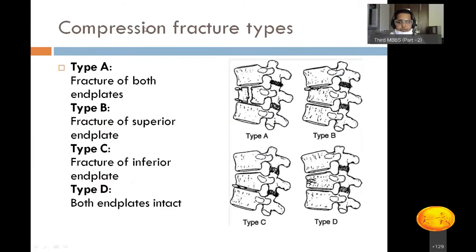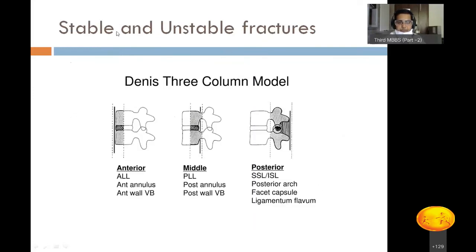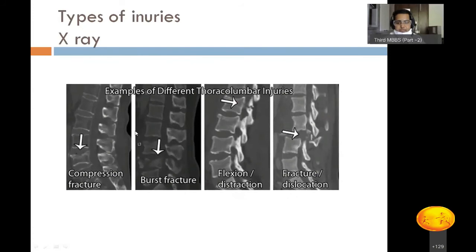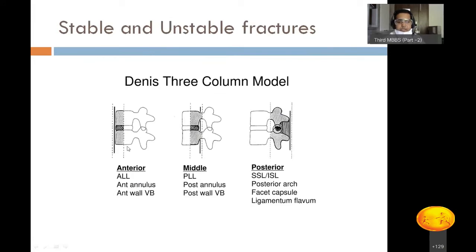Compression fractures are further subclassified: Type A — fractures of both end plates; Type B — fracture of the superior end plate; Type C — fracture of the inferior end plate; Type D — both end plates intact but the vertebral body has crumbled. Applying the Denis three-column model, stability is determined by how many columns are involved. Any injury involving two or more of the three columns is considered unstable — whether it is anterior + middle, middle + posterior, or anterior + posterior column involvement.